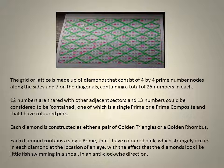The amazing coherence and congruence displayed above shows 4x4 prime number nodes along the sides of 25 numbers in each. 12 numbers are shared with other adjacent sectors and 13 numbers could be considered to be contained, one of which is a single prime or a prime composite. Each diamond is constructed as either a pair of golden triangles or a golden rhombus. Each diamond contains a single prime at the location of an eye, with the effect that the diamonds look like little fish in clockwise direction.